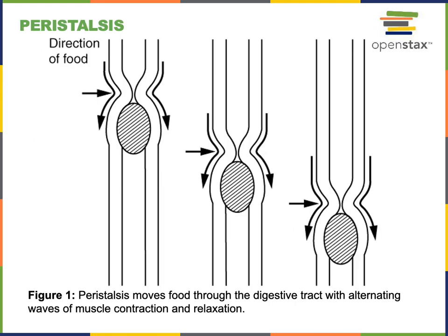Peristalsis is a pattern of smooth muscle contraction in the wall of the alimentary canal and is a major mechanism of propulsion. The muscular contraction spreads as a wave, with a relaxation spreading just ahead of the contraction that spreads behind. This enables the bolus to be propelled into the relaxed region as the wave of contraction travels behind it.